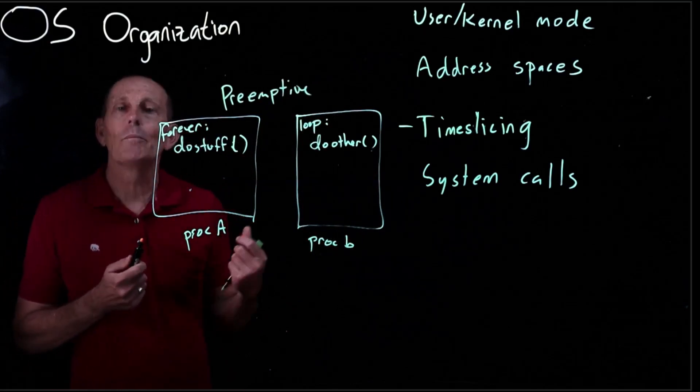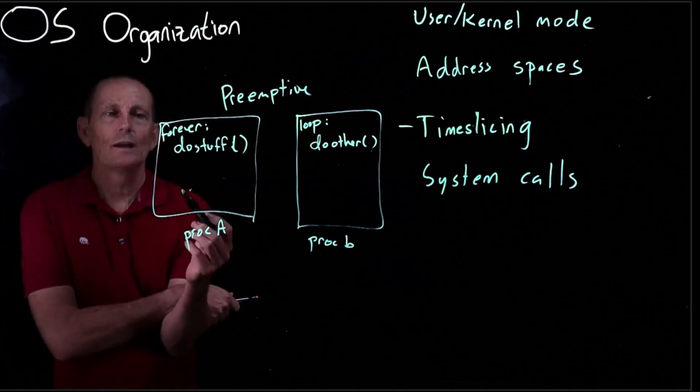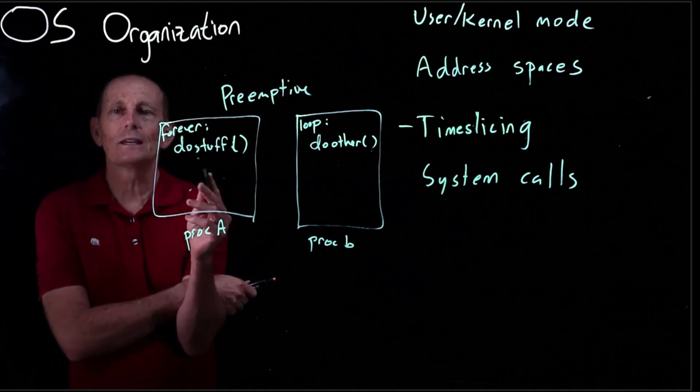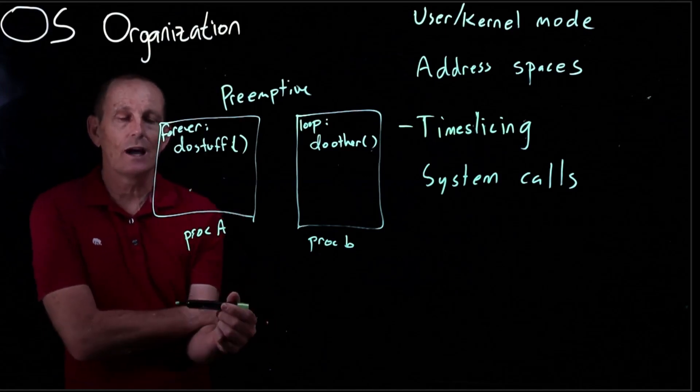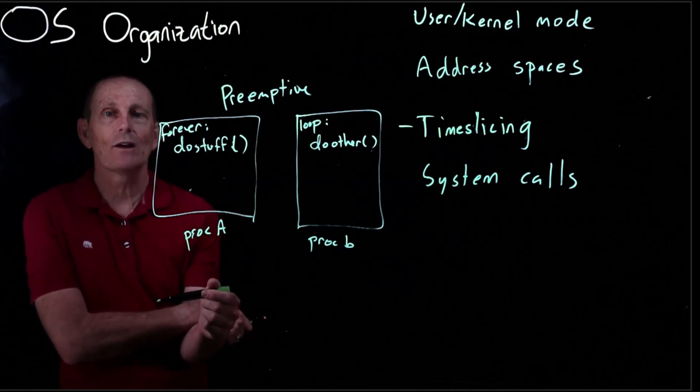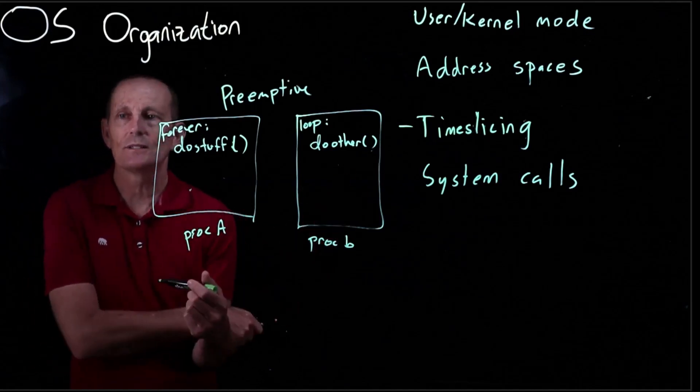Well one possibility is process A might as part of doing stuff make a system call. When it makes a system call that's certainly an opportune time for the kernel to say oh maybe now I should go ahead and context switch into process B.